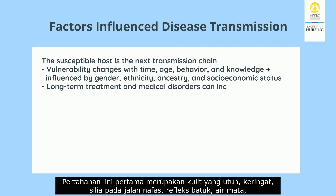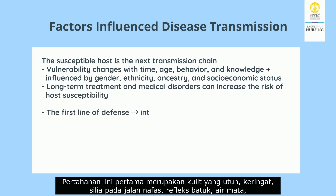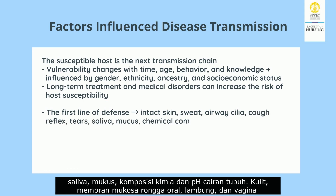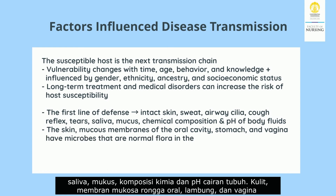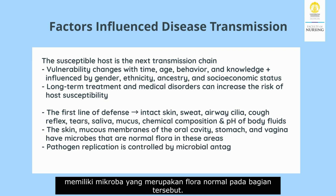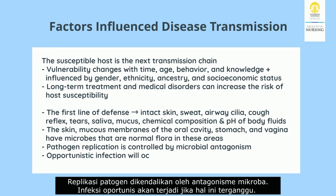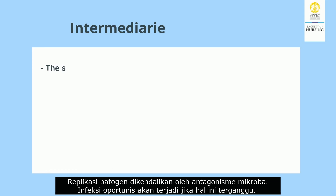The first line of defense includes intact skin, sweat, nasal cilia, cough reflex, tears, saliva, mucus, chemical compositions, and the pH of body fluids. The skin and mucous membranes of the oral cavity, stomach, and vagina have microbes that are normal flora in these areas. Pathogen replication is controlled by microbial antagonism, and opportunistic infections will occur if this balance is disturbed.